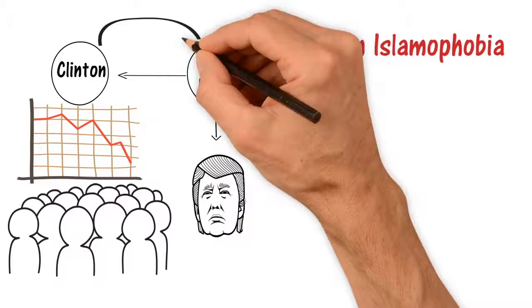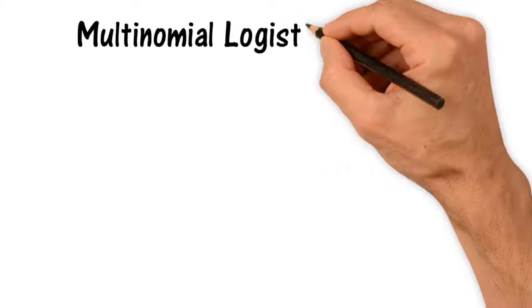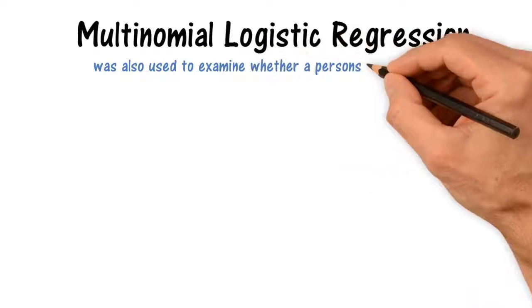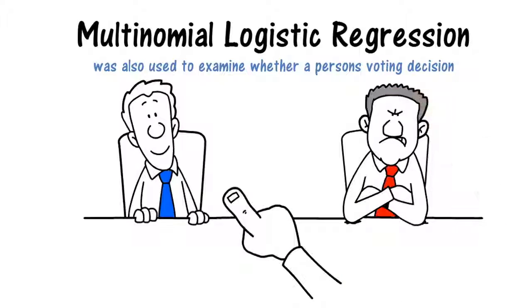Clinton and third-party undecided voters were both lower than Trump voters. Multinomial logistic regression was also used to examine whether a person's voting decisions could be predicted from their attitudes, and the answer was yes.